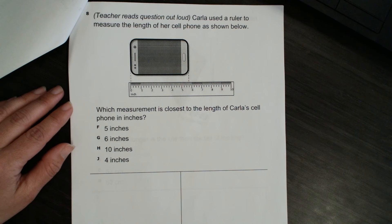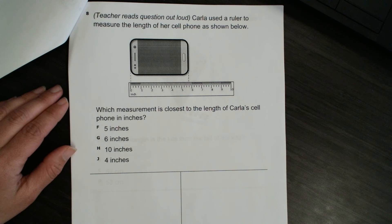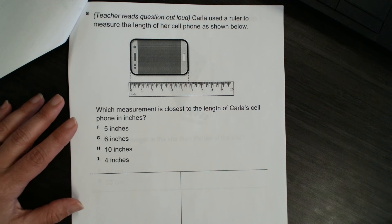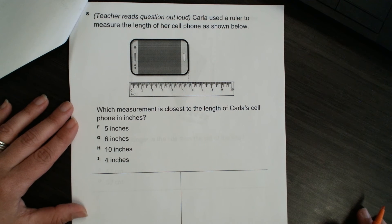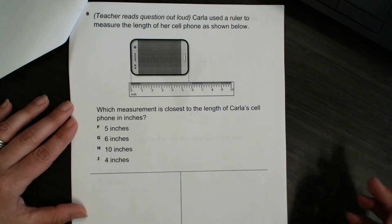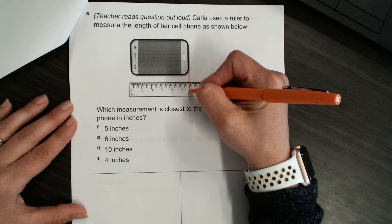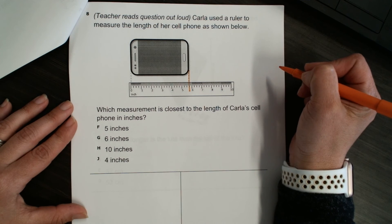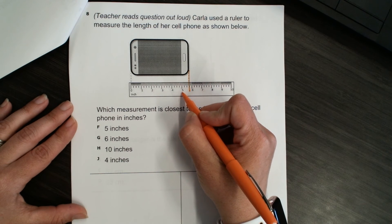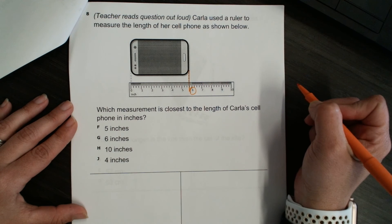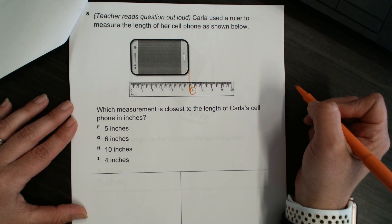Number eight. Carla used a ruler to measure the length of her cell phone as shown below. So, which measurement is closest to the length of Carla's cell phone in inches? So, we can see they've given us a line here to show the length of Carla's cell phone. Now, is that closer to the five or closer to the six? To the six. So, Carla's cell phone is six inches.